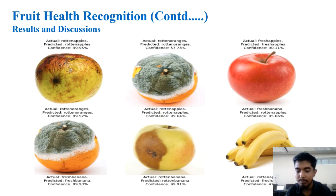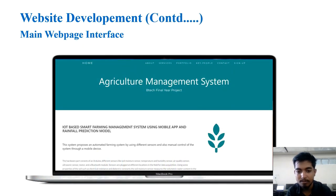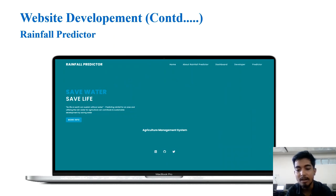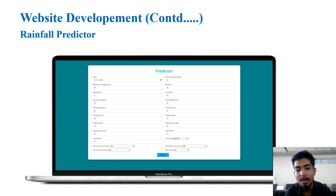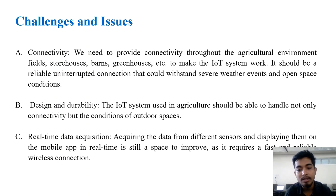For website development, we created the main website using front-end technologies such as HTML, CSS, Bootstrap, and JavaScript, and Flask for the back end. The main website is titled 'Agriculture Management System.' The rainfall predictor interface allows users to input data into respective fields and, upon clicking predict, it predicts whether there will be rainfall tomorrow. The fruit health recognition portion of the website is also available.